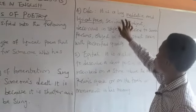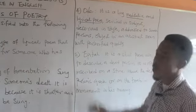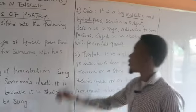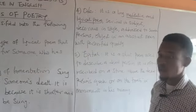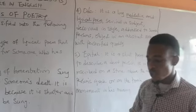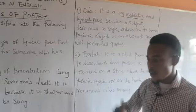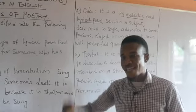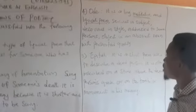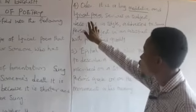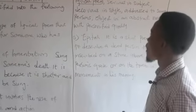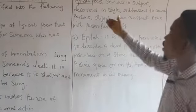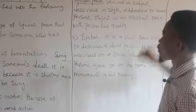The Ode is a long meditative and lyrical poem. As it is long and meditative, it is also lyrical. What is lyrical? A rhyme has to do with the rise and fall of a sound — a repeated sound that gives meaning to what you are writing. That is also what a lyrical poem is about. Then it is addressed to someone: it could be a person, it could be an object, or it could be an abstract noun.